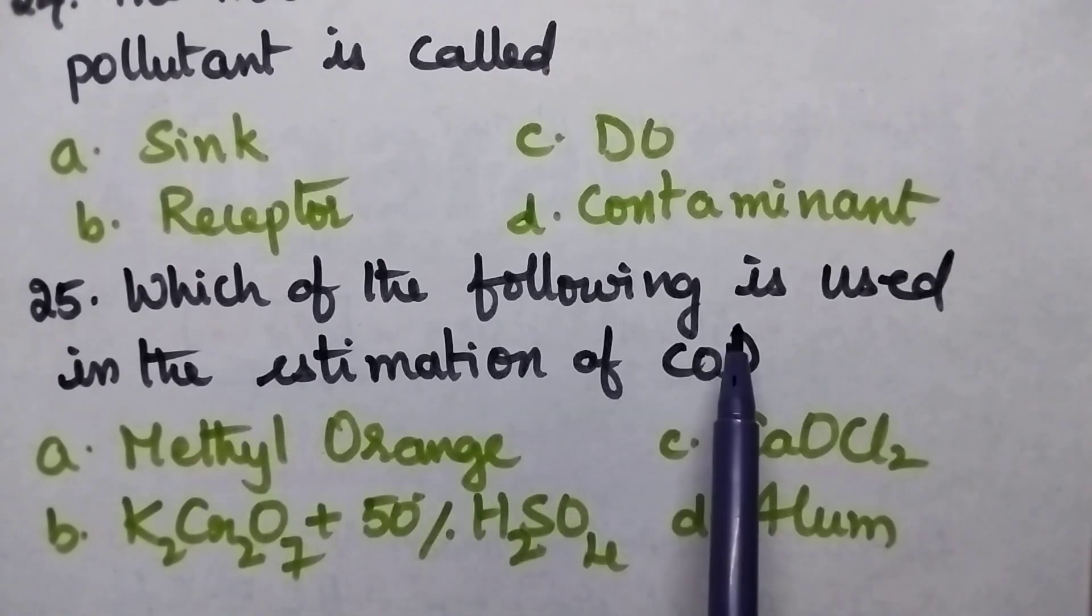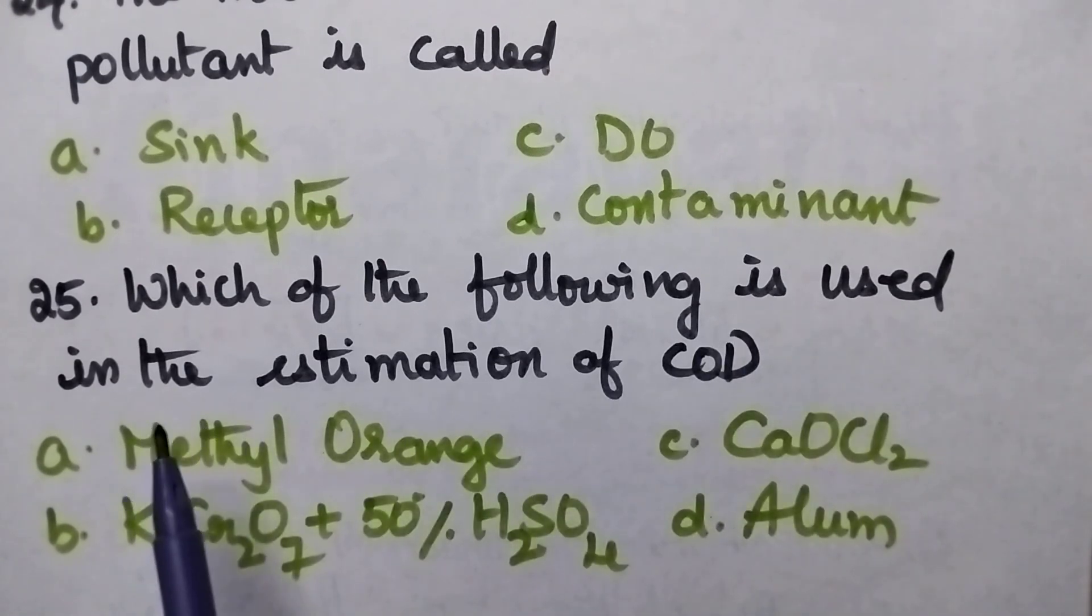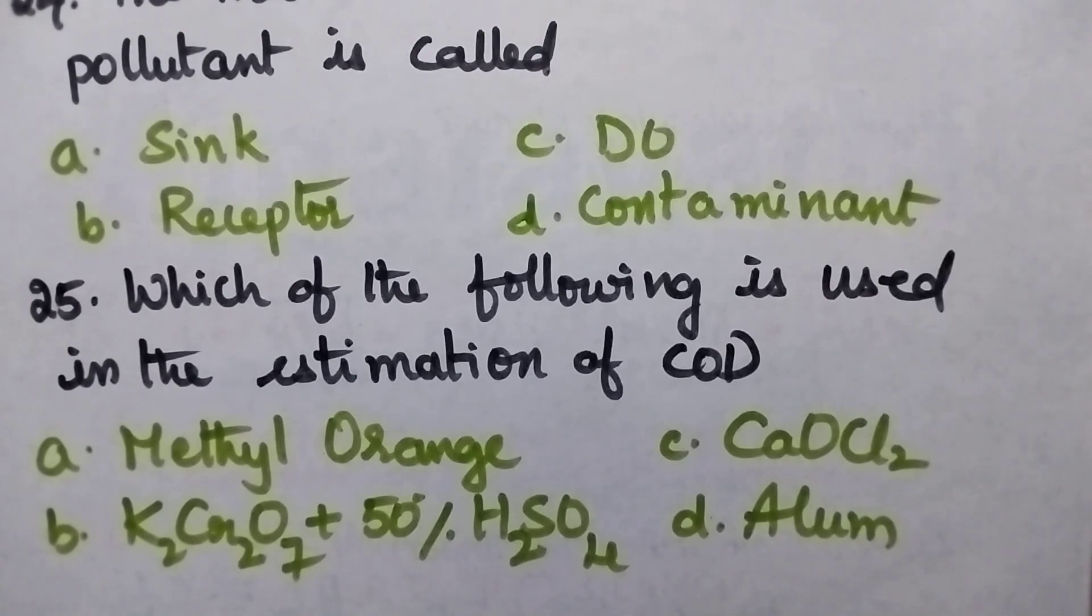Which of the following is used in the estimation of COD? Option A: Methyl orange, B: Potassium dichromate plus 50% sulphuric acid, C: Calcium oxychloride, D: Alum.